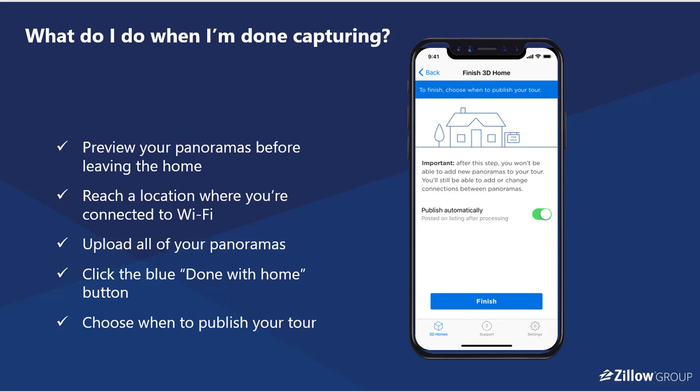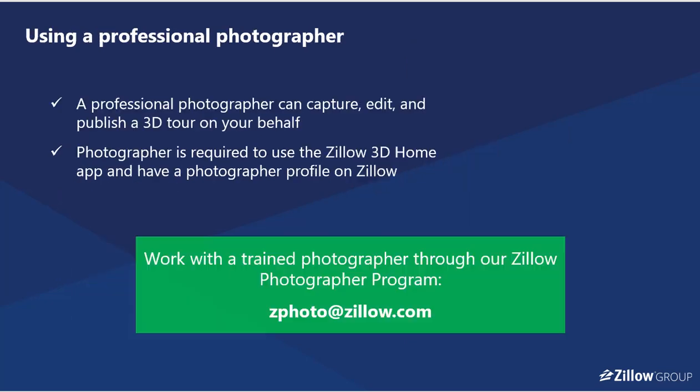When you're done capturing, preview your panoramas before leaving the home if possible. Reach a location where you're connected to Wi-Fi or a hotspot and upload all of your panoramas. Click the blue 'Done with Home' button and choose when to publish your tour. If you're using a professional photographer who is unfamiliar with 3D Home, we'll be happy to train that photographer — you can reach out to us at zphoto@zillow.com. We can also provide you with a photographer if you do not have one.